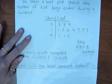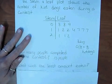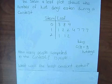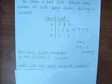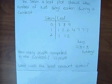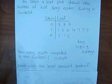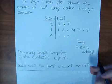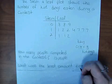What was the least amount of hot dogs eaten? Well, the least amount would be the smallest stem and the smallest leaf. So 8 hot dogs is the least amount eaten.